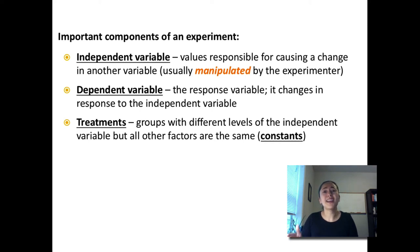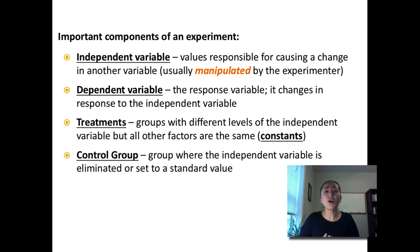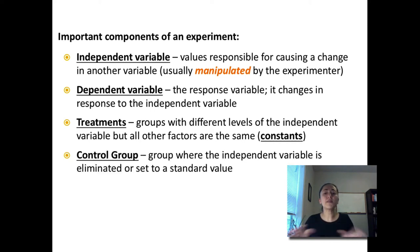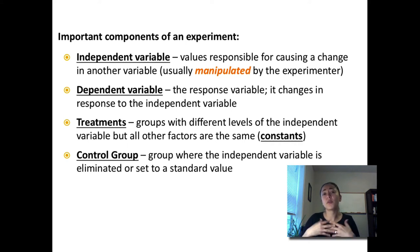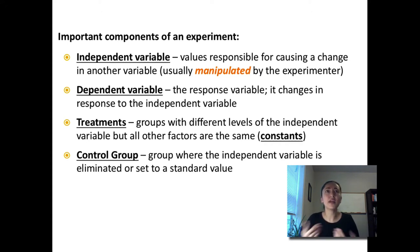One important thing to remember about treatments is that the only thing you want different between each treatment is the independent variable itself — every other factor needs to remain the same or be constant. Otherwise we can have confounding results. Usually you will also want a control group — a group where the independent variable is eliminated or set to some standard value. The purpose of the control group is to have a comparison to see what would happen if the independent variable didn't even exist at all.